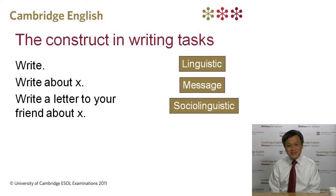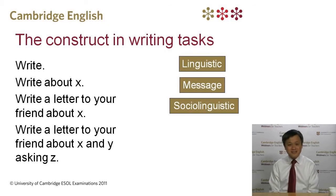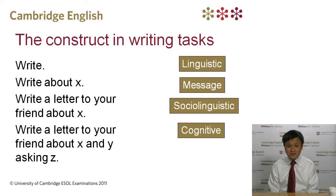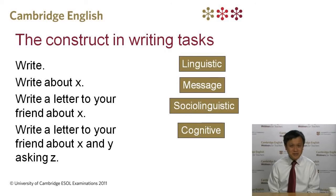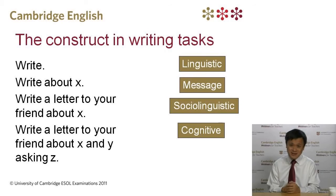Finally, let's look at one last part of the rubric: 'write a letter to your friend about X and Y asking Z.' In many of our tasks, we don't just ask candidates to do one thing — we ask them to do multiple different things. When we ask them to do multiple things, candidates need to think through what they want to say and organise their ideas so that their writing is coherent and makes sense. This is meant to target the cognitive dimension of writing ability, giving us a sense of what's going on in their heads.